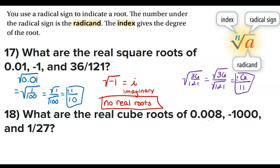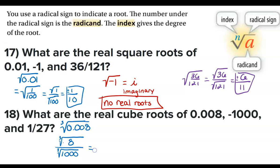What are the real cube roots of 0.008? We write this as the cube root of 0.008 and change it to a fraction: the cube root of 8 over the cube root of 1000, because 0.008 is 8/1000. The cube root of 8 is 2 and the cube root of 1000 is 10, which reduces to 1/5. I do not need the plus or minus symbol because this is an odd root.